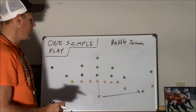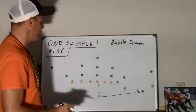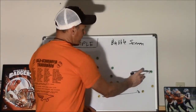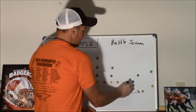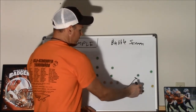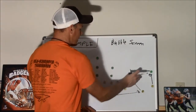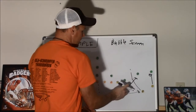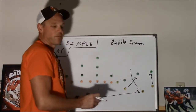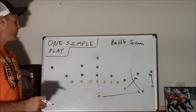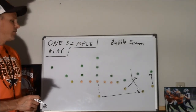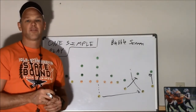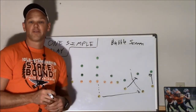Now what happens from there depends on how the defense defends us. If the end bumps out here, the Y will come in and block this person and he'll cut it up in here as the H blocks the cornerback. If they bring an outside linebacker out here, same thing. It all depends on how the defense responds. It's a pretty simple way to get the ball in space to one of your backs with kids. Let's just take a look at a video of a bubble screen.